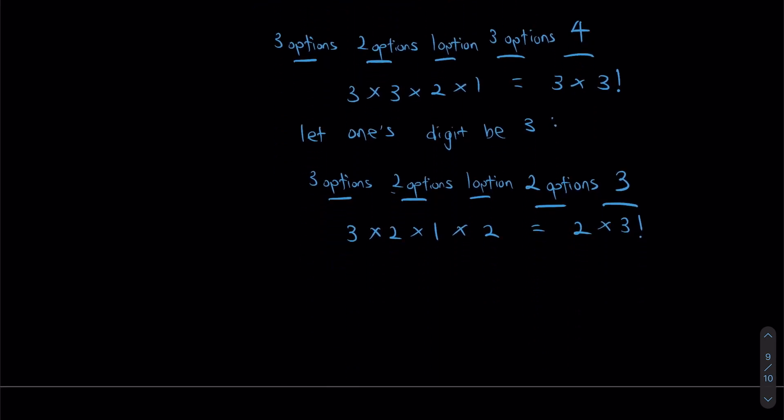We now move on to letting the ones digit be two. And once again, one, two, three, four, five. If this is two, I only have one option for my tens